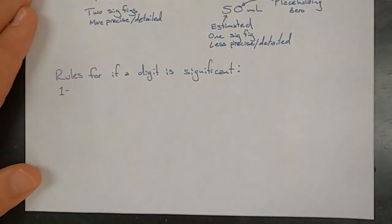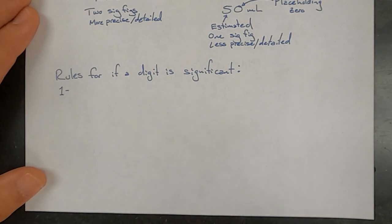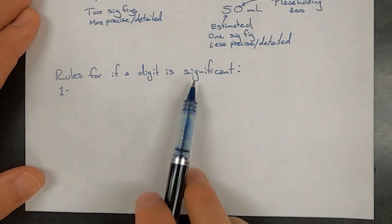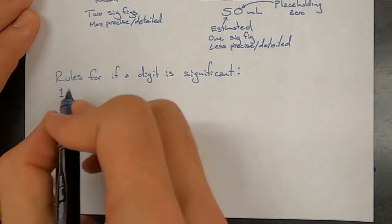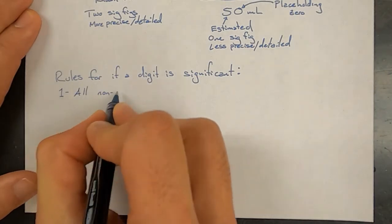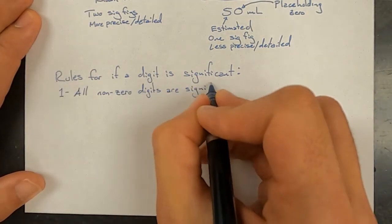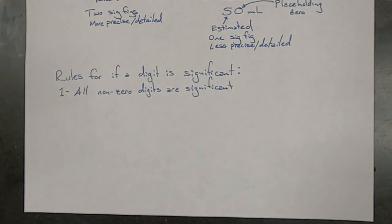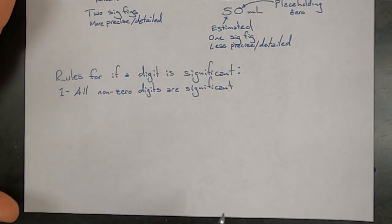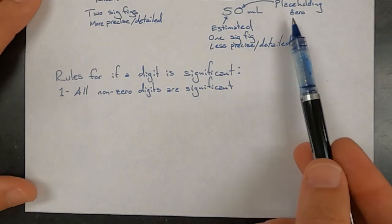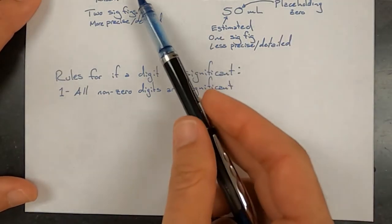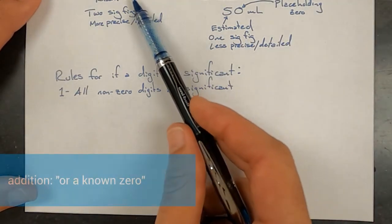Rule one is that all non-zero digits represent significant figures. The remaining rules are going to deal with zeros — whether they are significant or not — and it comes down to whether they were a place-holding zero or an estimated zero.